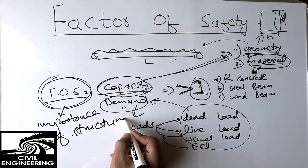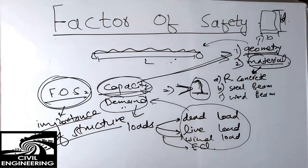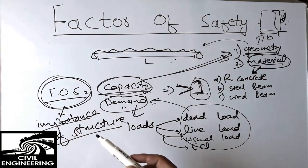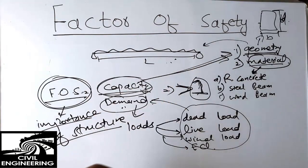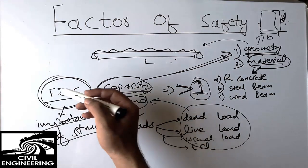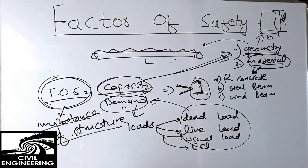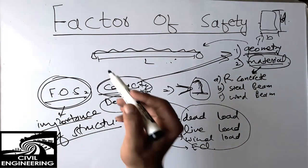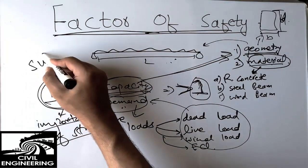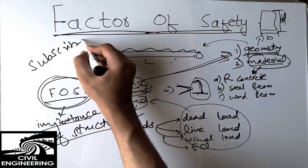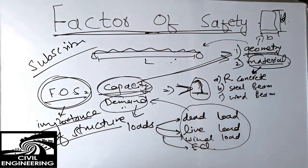This is really important in engineering terms. For foundations, we keep a higher factor of safety compared to the superstructure, because the footing is more important than the upper floors of the building. That was all about the factor of safety. Please subscribe to our channel for more civil engineering updates, and thank you for watching.